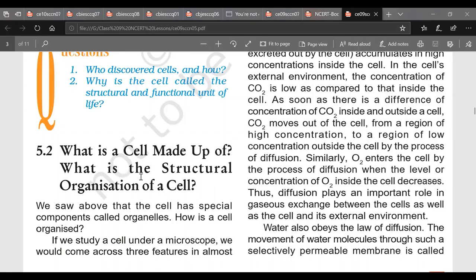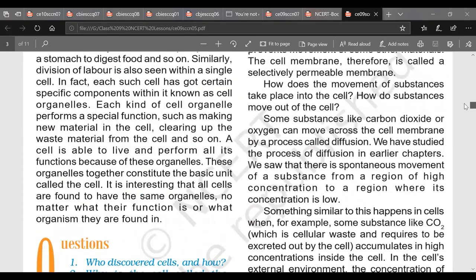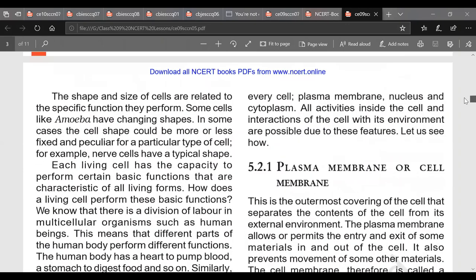Now what is cell made up of? Second part: what is cell made up of and what is structural organization of cells? We saw here, if we study a cell in a microscope, we would find that there are three features which are common to all the cells. So this is another one more question. Three features which are common to all the cells are plasma membrane, nucleus, cytoplasm. So these are the features which are common to all the cells.